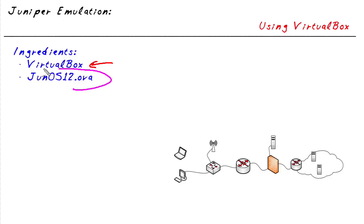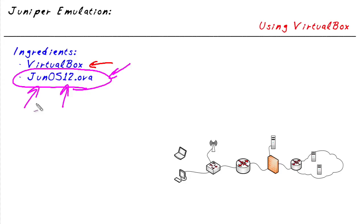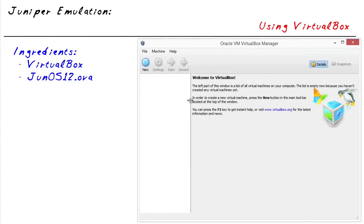The other thing you'll want to get is the juneos12.ova file. The reason you'd want this file is that this is the easiest — bar none — the easiest and fastest way to get Juniper emulation up and running in VirtualBox. I'd do a Google search for that file. That, combined with VirtualBox, are all the tools you're going to need to set up a virtual environment with Juniper.